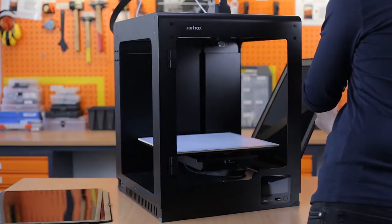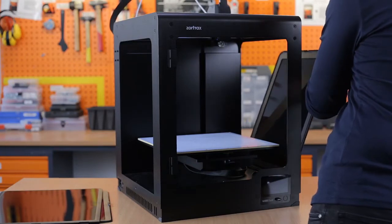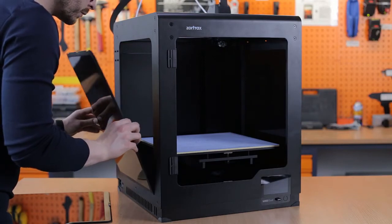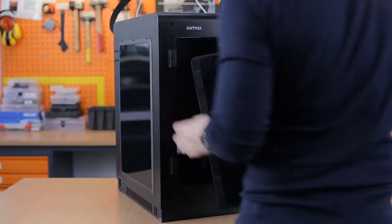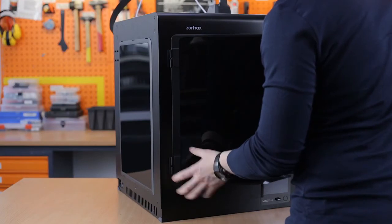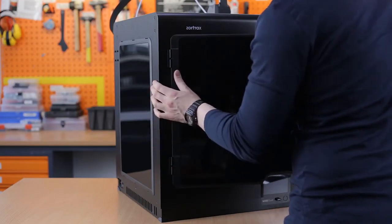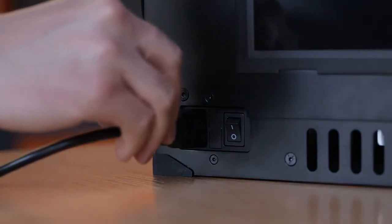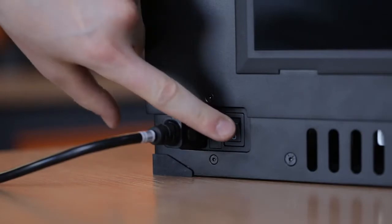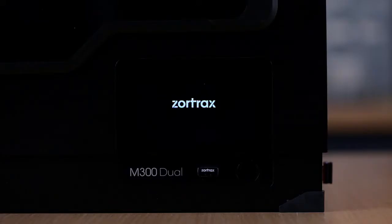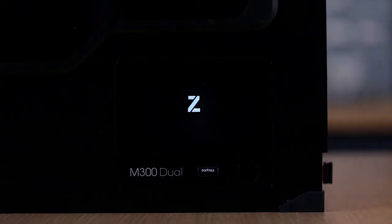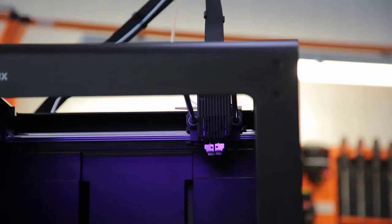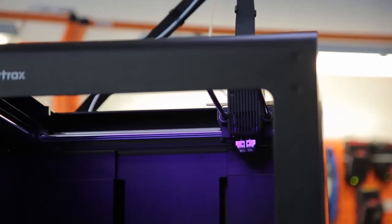You're almost there. Now, install the side covers at the sides and at the front of the printer. Later, you can plug in the power cable and turn on the device. You have successfully set up your printer, and there's still time to install the Zortrax HEPA cover on top of your device.